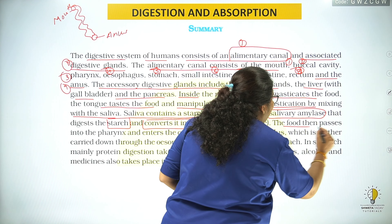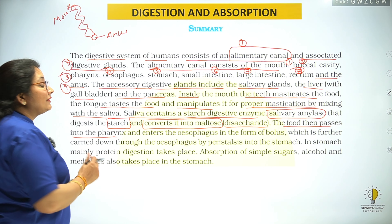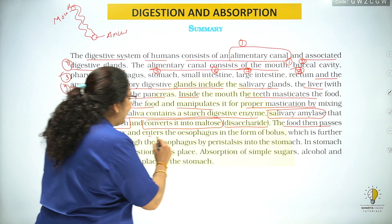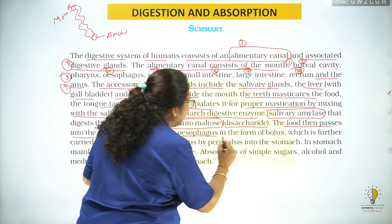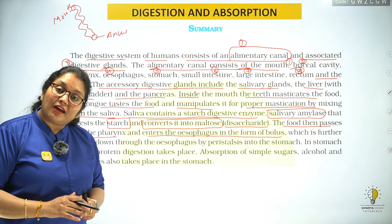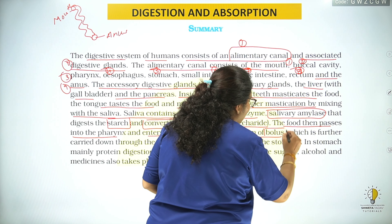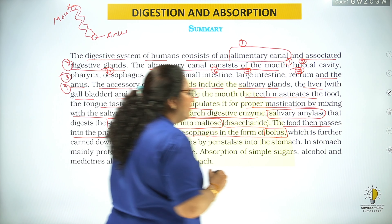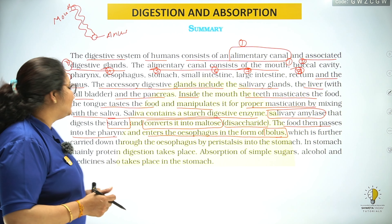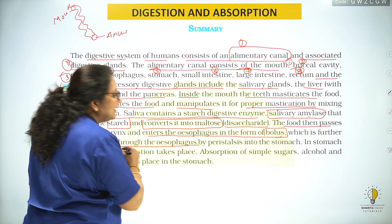The food then passes into the pharynx and enters the esophagus in the form of bolus. Chewed food after the digestion of carbohydrate is known as bolus, which is further carried down through the esophagus by peristalsis.